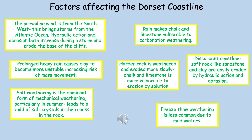We've looked at the key landforms on the Dorset coastline. Now let's think about how different factors are affecting this coastline through erosion and weathering. The prevailing wind is from the southwest, carrying warm moist air across the Atlantic Ocean. This can bring stormy weather and large destructive waves, which increases hydraulic action and abrasion. Prolonged heavy rain during stormy periods can cause clay to become more unstable, leading to an increased risk of mass movement.